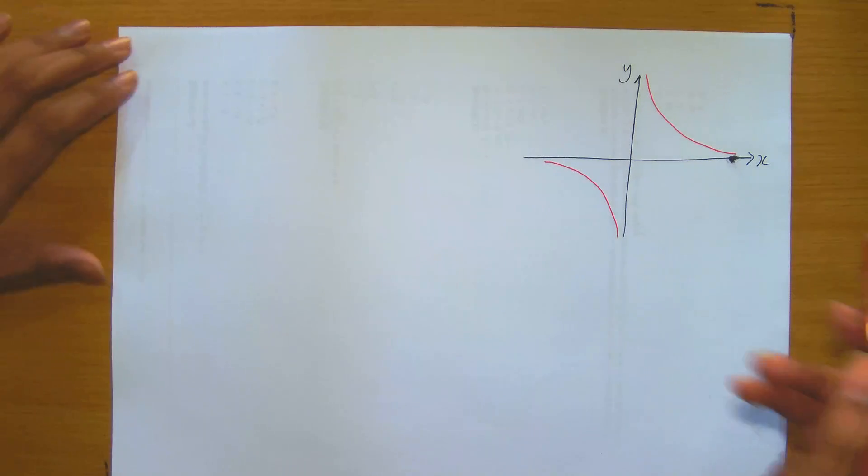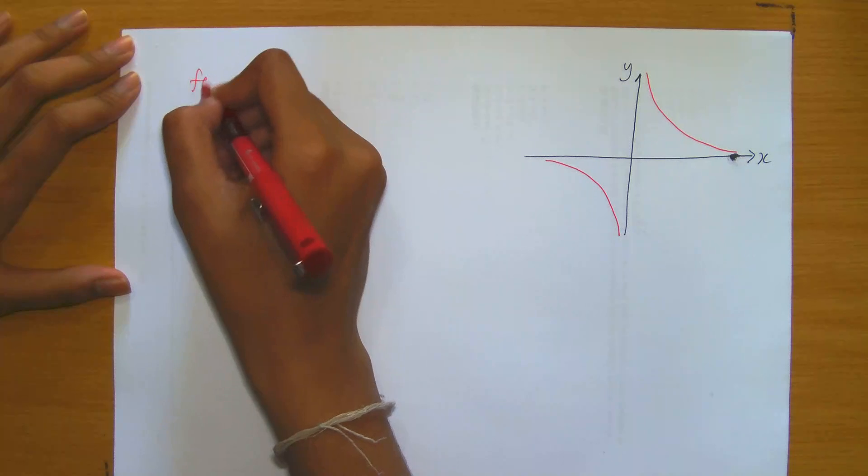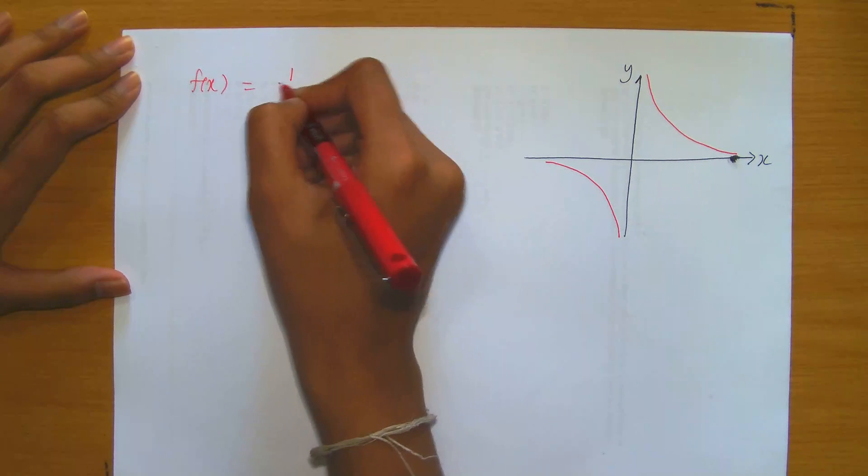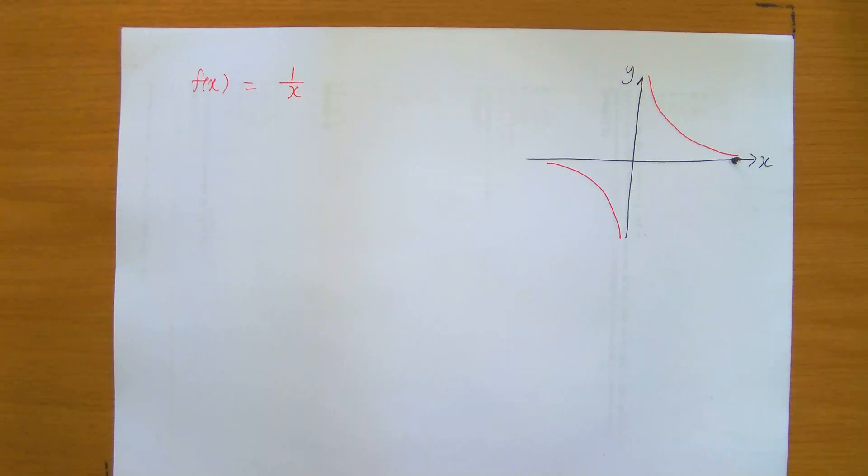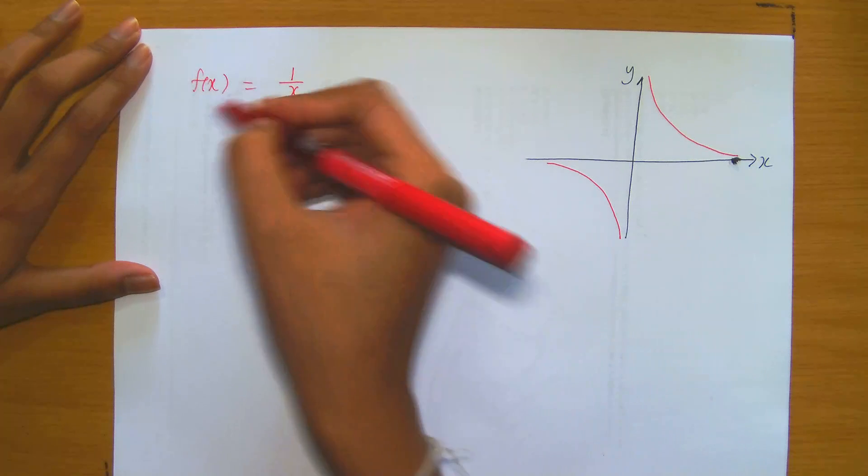Let's look at the following example that I've prepared. Let's consider f(x) equals 1 over x. A very basic graph. The hyperbola has been drawn. Immediately, if you wanted to discuss the discontinuities,